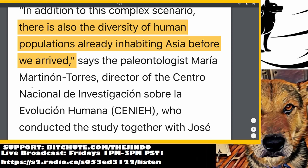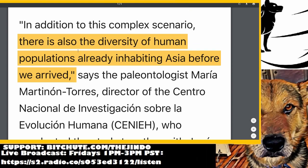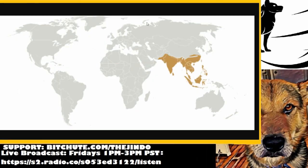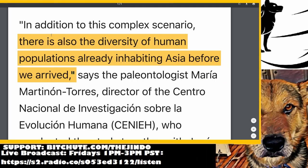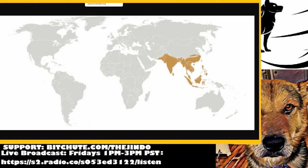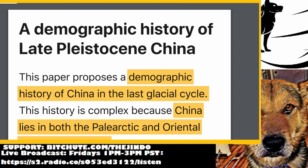Maria Martinon-Torres, director of Senia, says: 'In addition to this complex scenario, there's also a diversity of human populations already inhabiting Asia before we arrived' — meaning anatomically modern humans. So when these two populations came in or converged in China, there were already people living there: not only the oldest anatomically modern humans, but also Homo erectus, Neanderthals, and Denisovans — including on the Tibetan Plateau, where Denisovans developed the altitude gene. That adds a whole other dimension to the demographic history of Late Pleistocene China.